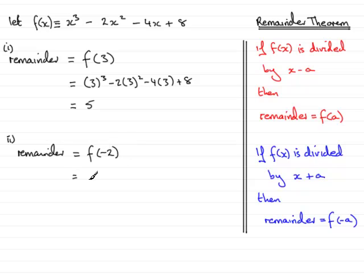So putting that through the expression up here, we have minus 2 cubed minus 2 multiplied by minus 2 all squared minus 4 times minus 2 and then plus 8. If you work that out, what you get is in fact 0.